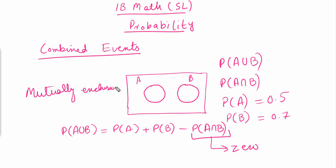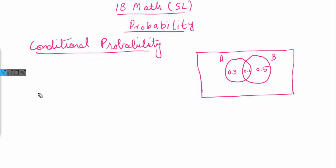That's the key difference to keep in mind: mutually exclusive events have no overlap, so P(A ∩ B) = 0, while non-mutually exclusive events share an overlapping region. Now after this concept, let's discuss conditional probability.